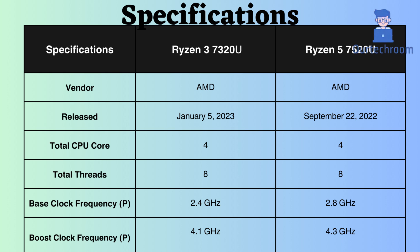The Ryzen 3 7320U was released approximately 4 months after the release of the Ryzen 5 7520U. Both of these processors have 4 performance cores and 8 performance threads. The base clock frequency of the Ryzen 3 7320U is 2.4 GHz, while that of the Ryzen 5 7520U is 2.8 GHz. Judging by the base frequency, we can infer that the Ryzen 5 7520U might perform better under normal CPU loads.